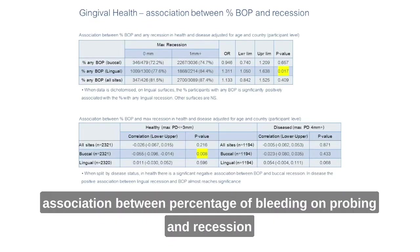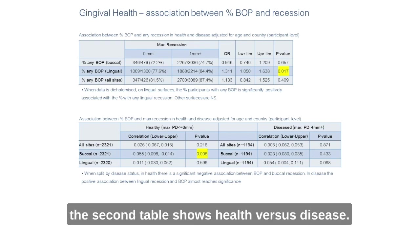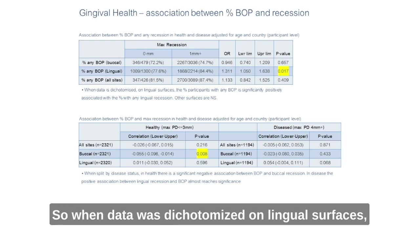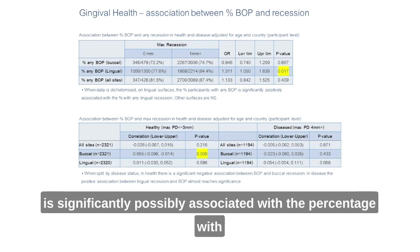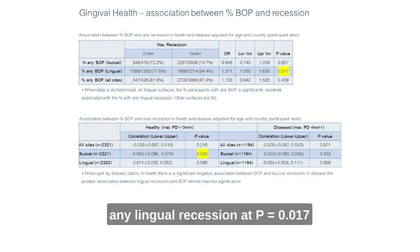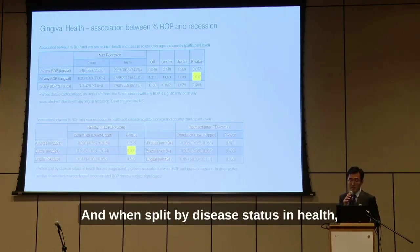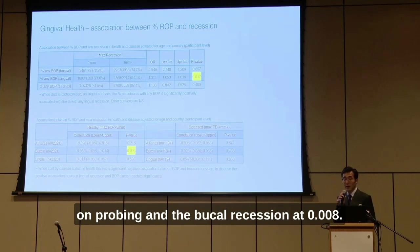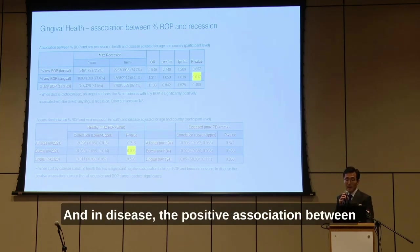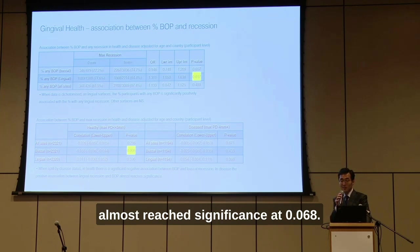In terms of gingival health, this slide examines the association between percentage of bleeding on probing and recession. The first table shows data for the whole mouth including health and disease; the second table shows health versus disease. When data was dichotomized, on lingual surfaces the percentage of participants with any bleeding on probing was significantly positively associated with the percentage with any lingual recession (p = 0.017); other surfaces were not significant. In health, there is a significantly negative association between bleeding on probing and buccal recession (p = 0.008), and in disease the positive association between lingual recession and bleeding on probing almost reached significance (p = 0.068).